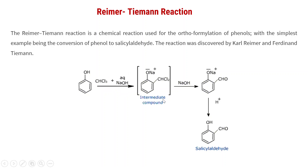An intermediate compound is formed: a benzene ring connected with O-Na+, and on the ortho position, CCl2 is connected. In the presence of NaOH, this intermediate is converted into a benzene ring connected with O-Na+ and CHO — this is the aldehyde. The CCl2 group is converted in the presence of NaOH into CHO.